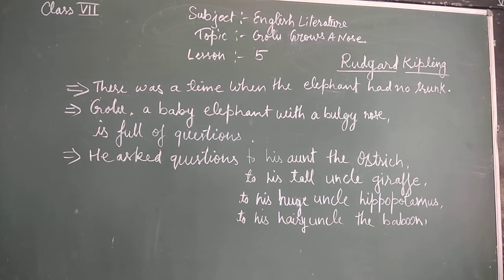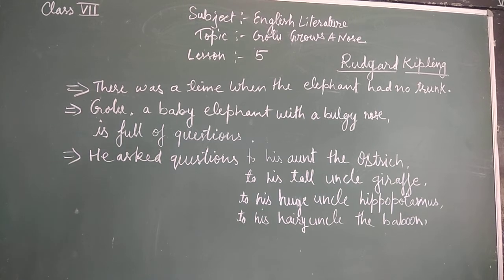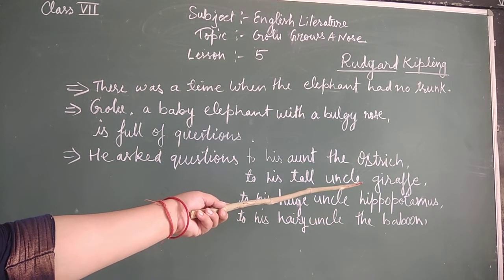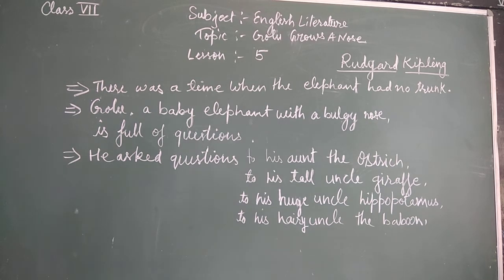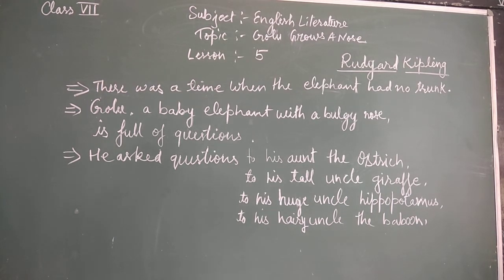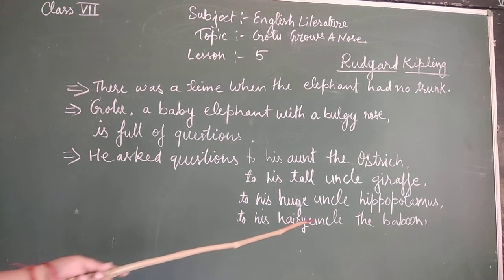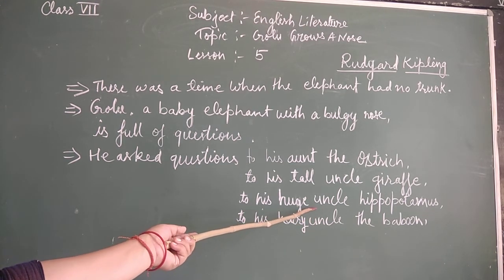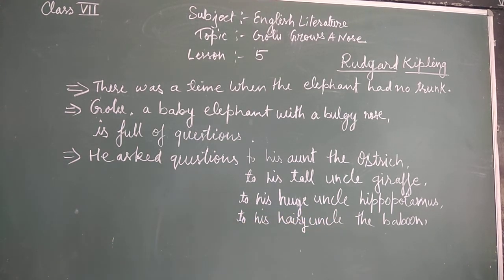Then he asked his tall uncle the giraffe one question: what makes your skin so spotty? As you know, the giraffe has spots on his skin, so he asked why do you have those spots on your skin. He asked his huge uncle the hippopotamus: why are your eyes always so red? As the hippopotamus has red eyes, so he asked one question about his eyes too.